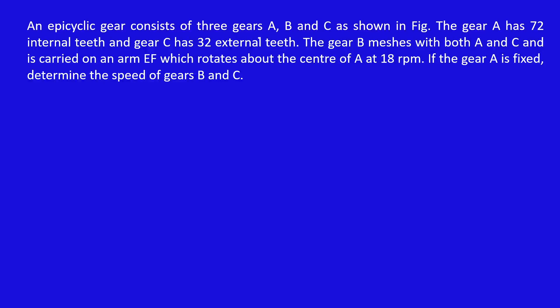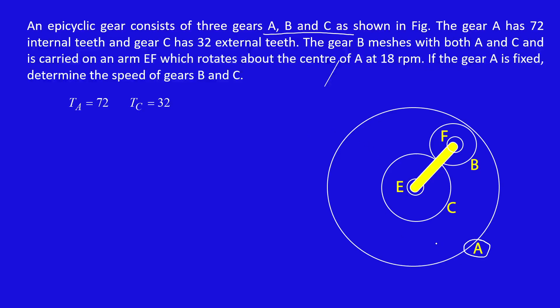An epicyclic gear consists of three gears A, B, and C as shown in figure. Gear A has 72 internal teeth and gear C has 32 external teeth. Gear B meshes with both A and C and is carried on arm EF which rotates about the center of A at 18 rpm. If gear A is fixed, we need to find out the speed of gears B and C, which means NA equal to 0.